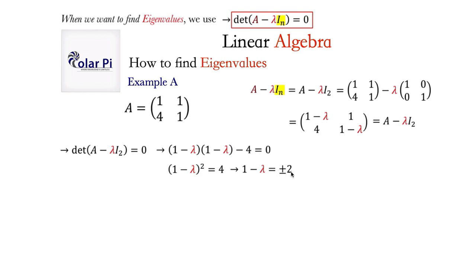So, then bringing this plus or minus 2 to the left and the lambda to the right will mean that we're pretty much done solving for our lambda. So, when the plus or minus 2 comes to the left, it becomes minus plus 2. So, it's 1 minus plus 2 and lambda is on the right-hand side and therefore a positive now. And so, the two lambdas and therefore the two eigenvalues are 1 minus 2 and 1 plus 2, therefore negative 1 and 3. Okay, cool. That concludes example A, our 2 by 2 example.